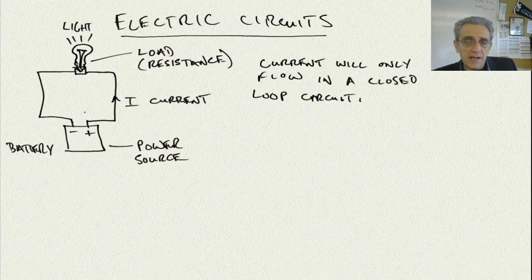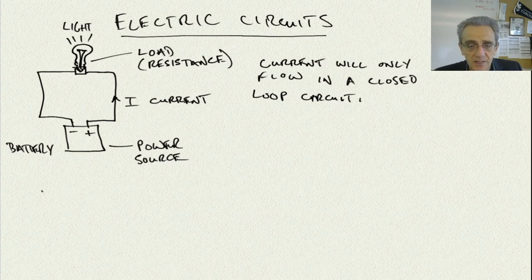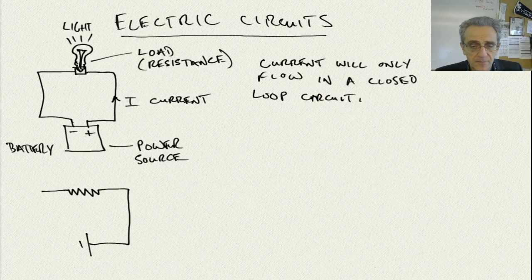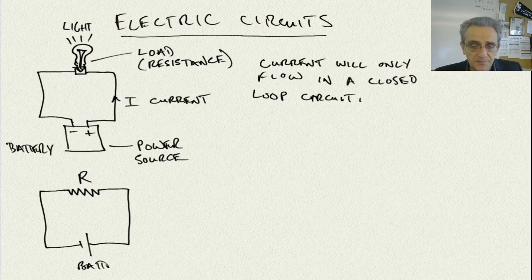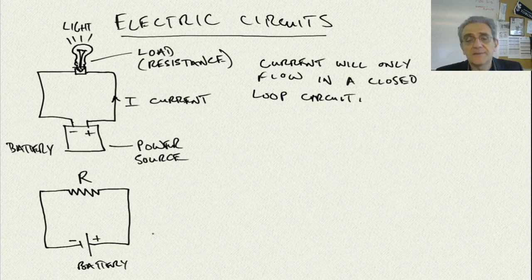Usually I don't denote this in picture format — I'll denote it in an electric diagram format. The diagram for the picture above would look like this. This is our resistance, R, and this is our power source, our battery. The battery terminals are negative and positive. This is the electrical circuit representation of the diagram above.